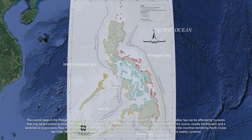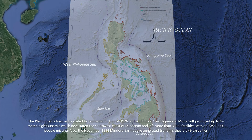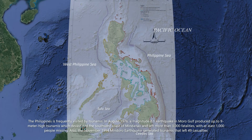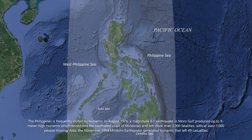Distant tsunamis, mainly coming from countries bordering the Pacific Ocean like Chile, Alaska in the USA, and Japan, can travel from 1 to 24 hours before reaching the coast of nearby countries. The Philippines is frequently visited by tsunamis. In August 1976, a magnitude 8.1 earthquake in the Moro Gulf produced up to 9-meter-high tsunamis which devastated the southwest coast of Mindanao and left more than 3,000 fatalities with at least 1,000 people missing. Also, the November 1994 Mindoro earthquake generated tsunamis that left 49 casualties.